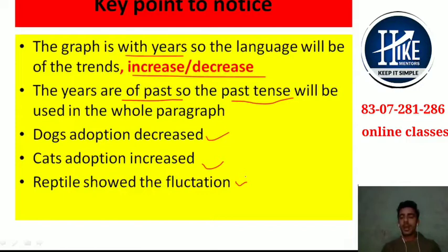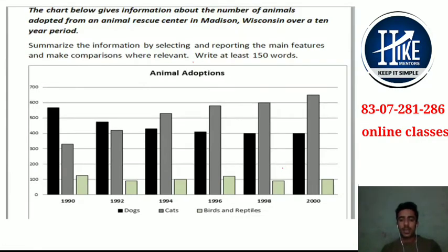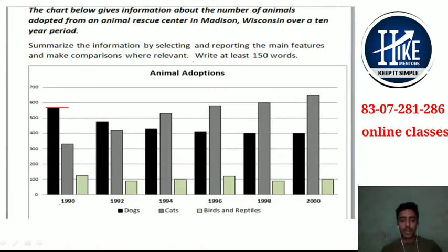In Task 1, you have around 15 minutes and students get a maximum of 18 minutes to write this. If you write it clearly, I guarantee your score — whether it is required for 6.5 or 6 — you can easily get it. Coming back to the graph: in the first year, the initial year, if I start with dog adoptions, their number is approximately 570, and in the initial year it is the highest.